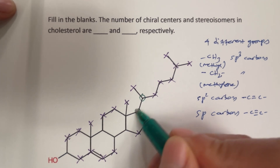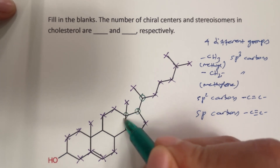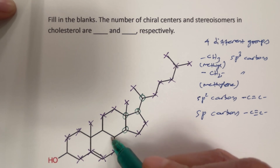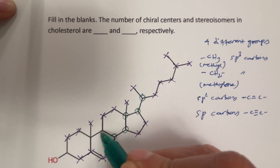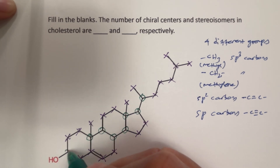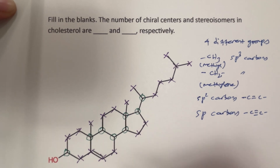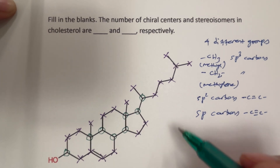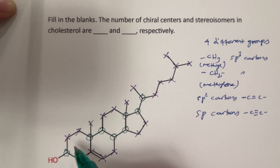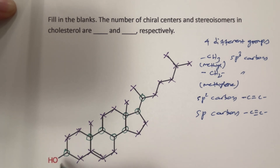Now let us circle the ones that are remaining: 1, 2, 3, 4, 5, 6, 7, 8. So these could be the chiral carbons and let us verify them one by one.